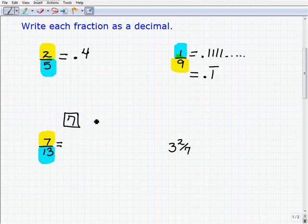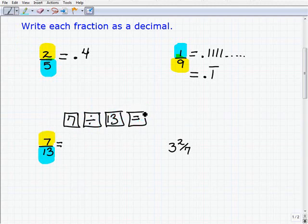So let's be clear here. You're going to go 7 on your calculator, division, and then 13, and then you're going to hit equal. So let's go ahead and do that.